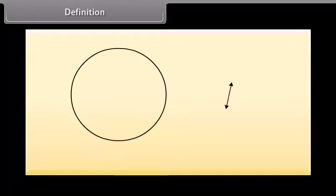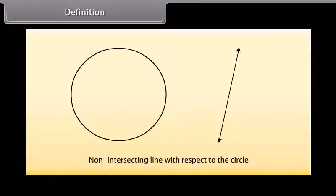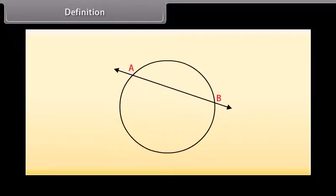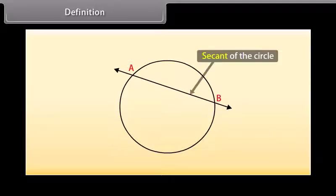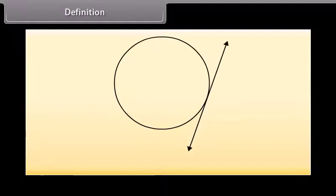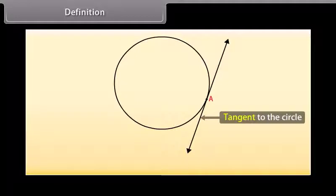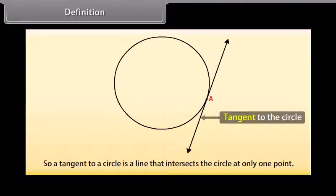Students, let us draw a circle and a line in a plane. We can see that the line and the circle do not have any common point, so the line is called a non-intersecting line with respect to the circle. In another case, there are two common points A and B that the line and the circle have — in this case the line is called a secant of the circle. And in the third case, there is only one point A which is common to the line PQ and the circle — in this case the line is called a tangent to the circle. So a tangent to a circle is a line that intersects the circle at only one point.